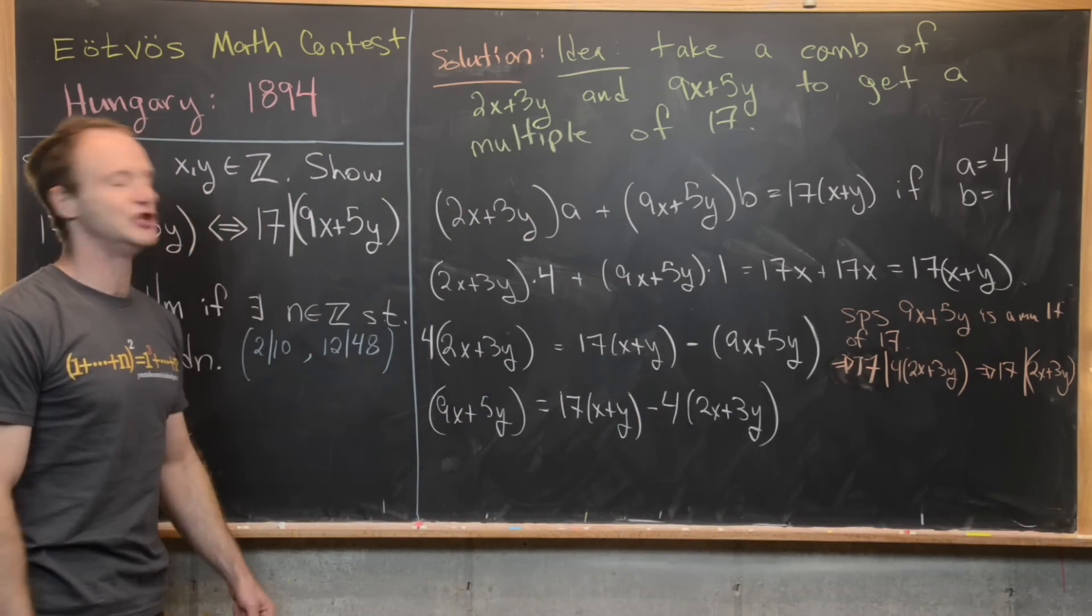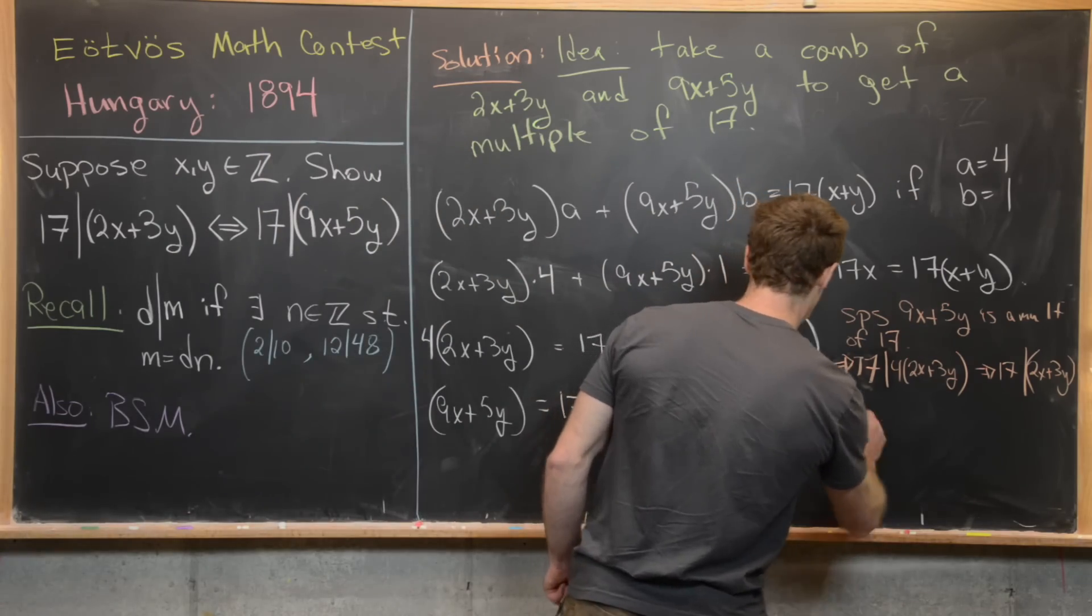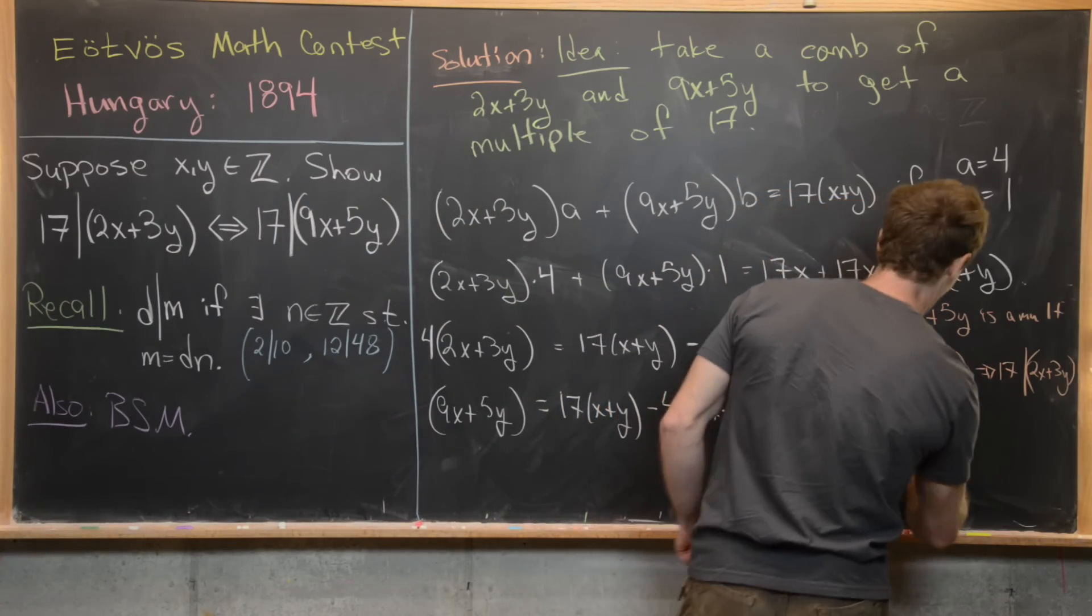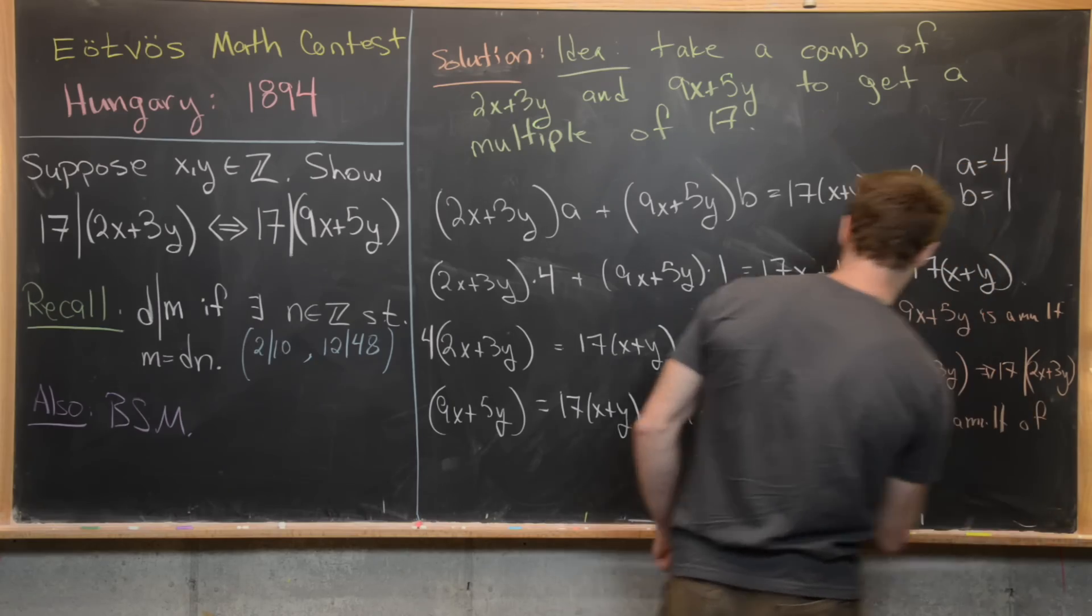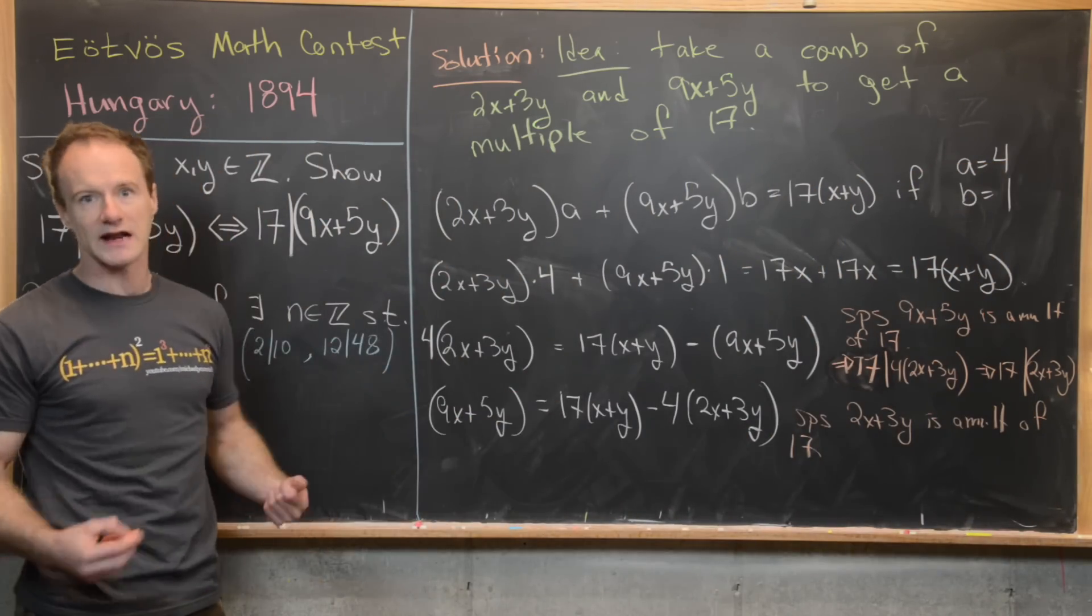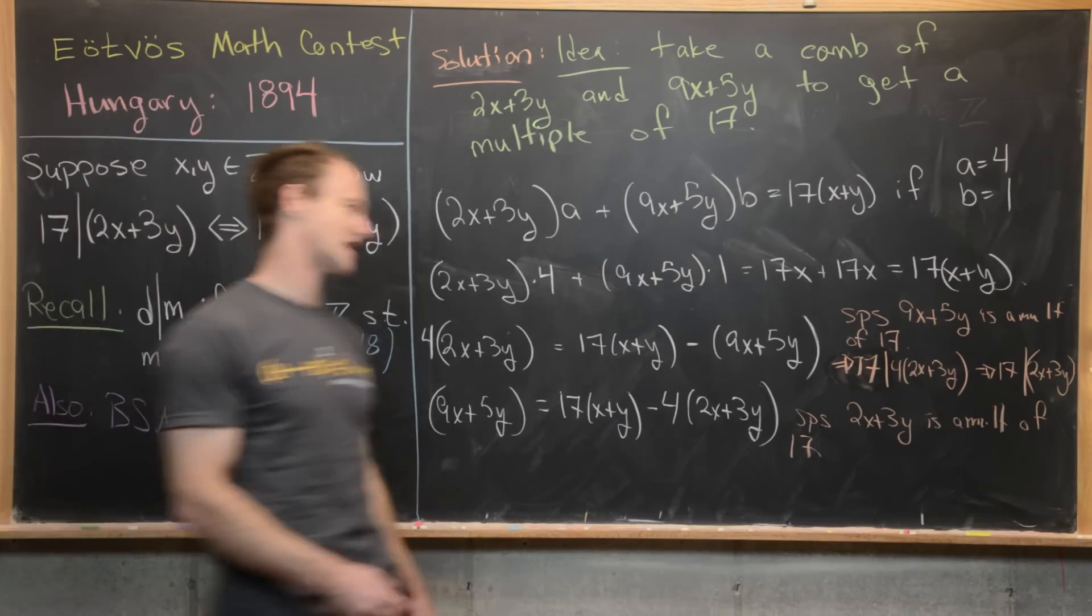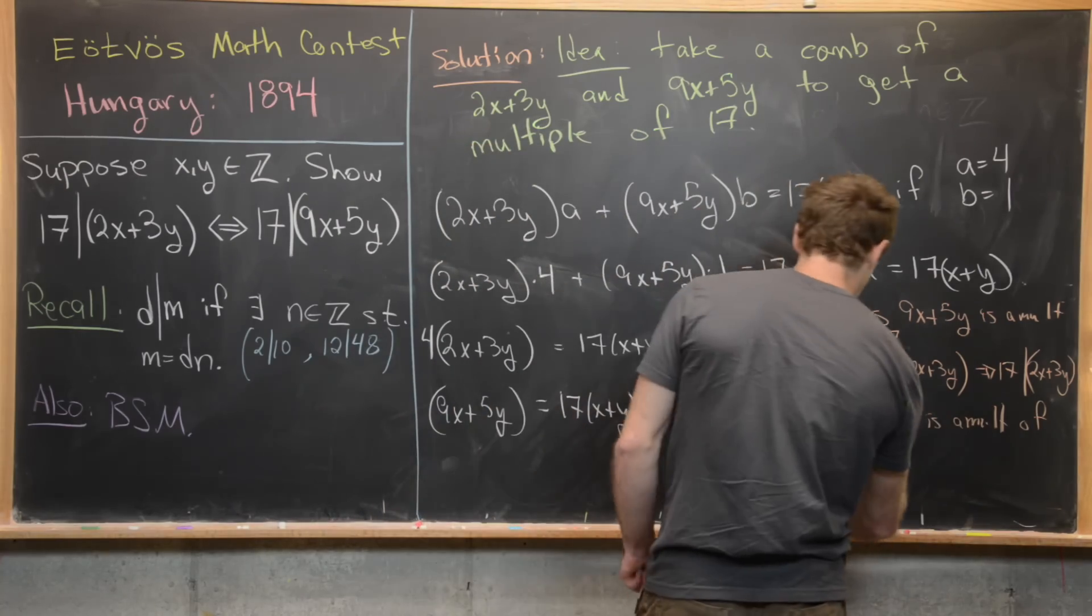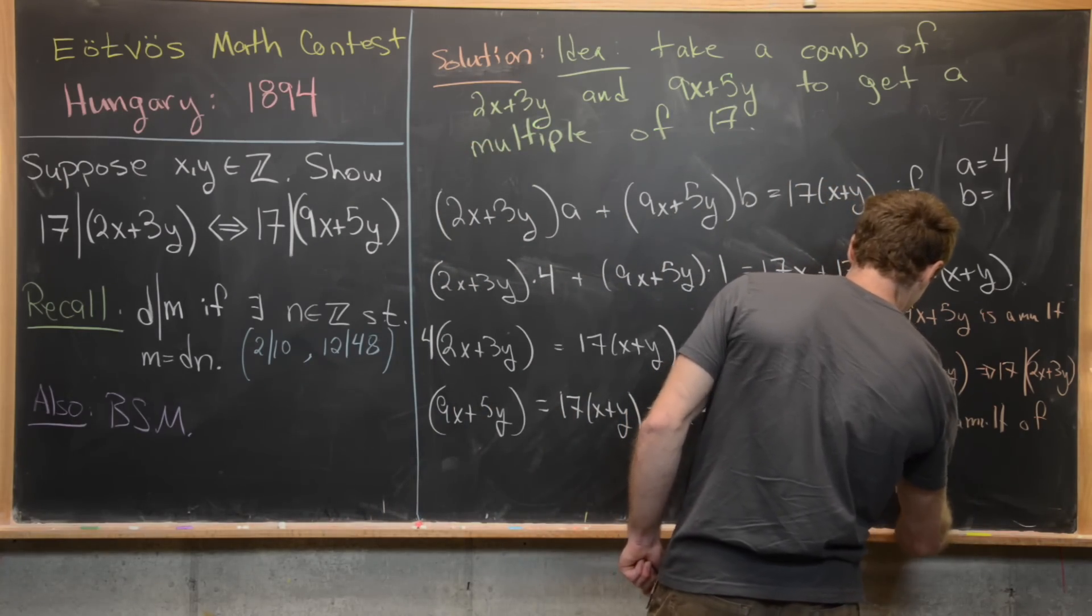Now the forward direction, you would do essentially the same thing. So you would suppose that 2x plus 3y is a multiple of 17. But that means that this entire right hand side is a multiple of 17. But that means this left hand side is a multiple of 17. But immediately, we get 17 divides 9x plus 5y, which is this other direction that we still needed to show.